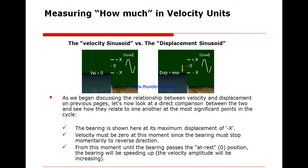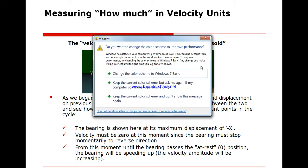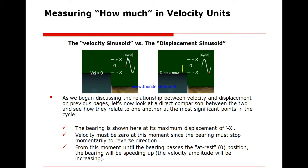When the bearing is at plus x, it must stop to reverse direction and then speed up to return to its rest position. When displacement amplitude is zero, the velocity is at its peak, since the bearing has maximum speed at that moment. From there, as the bearing approaches plus x, it slows down. So velocity is maximum at the rest position and zero at the extremes.